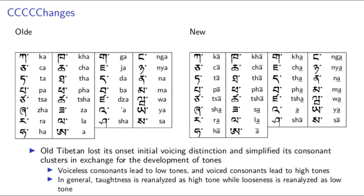Tones often arise in exchange for something else. As people pronounce certain initial consonants, they will pronounce the vowels immediately following those consonants with a higher or lower tone depending on the consonant. Often tautness in consonants is reanalyzed as a high tone, whereas breathiness or looseness of consonants is reanalyzed as a low tone. Then, something else happens to the phonology — perhaps a loss in distinction in initial consonants or consonant clusters — while the tone stays, thus making it phonemic. At this point, two syllables can differ only in tone, because the conditions that caused the tones to develop have disappeared.